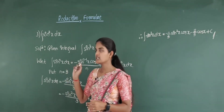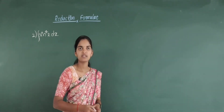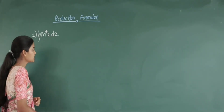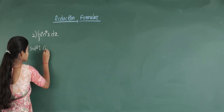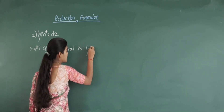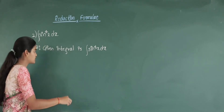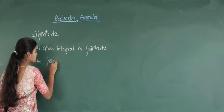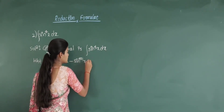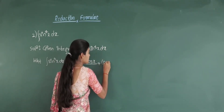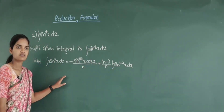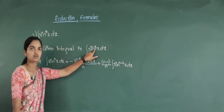The next example I will consider is integration of sin raised to 4 x. First we took sin raised to 3, now I will take the example of sin raised to 4. In the solution, again writing the given integral: integration of sin raised to 4 x into dx. Next we write the reduction formulae: integration of sin raised to n x into dx is equal to minus sin raised to n minus 1 x into cos x divided by n, plus n minus 1 divided by n, integration of sin raised to n minus 2 x into dx. Now in this we have to substitute n equal to 4 because sin raised to 4 is there.